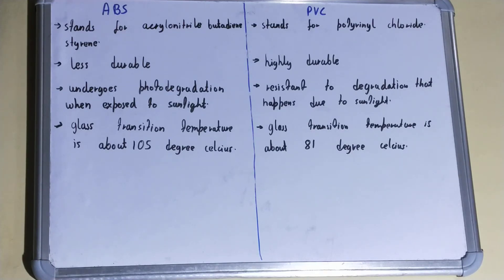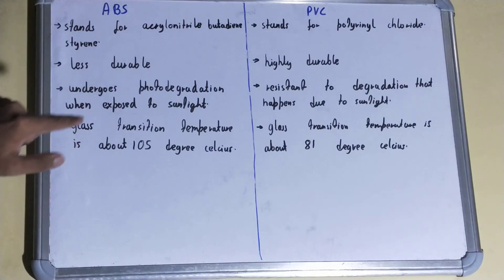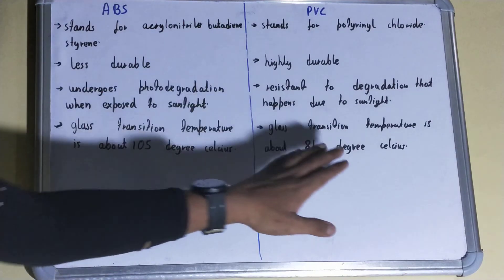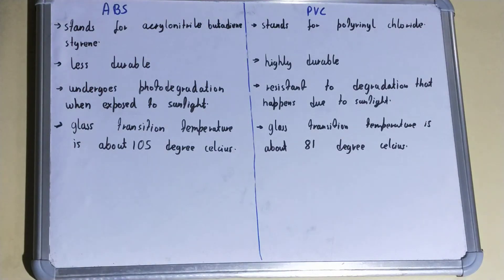If we talk about the glass transition temperature, in the case of ABS it is about 105 degrees Celsius, whereas for PVC the glass transition temperature is about 81 degrees Celsius. So this was all about the difference between ABS and PVC.